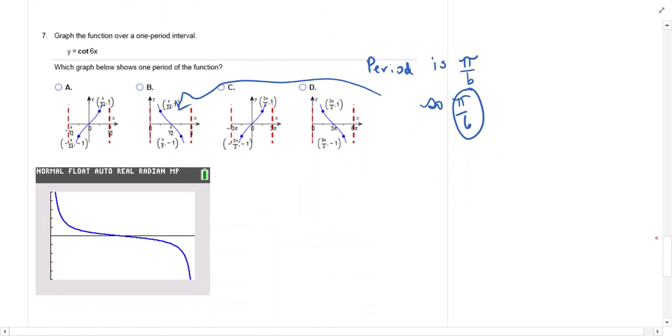On this one, cotan 6x, the period is pi over b, so the period is pi over 6. So we need to look.